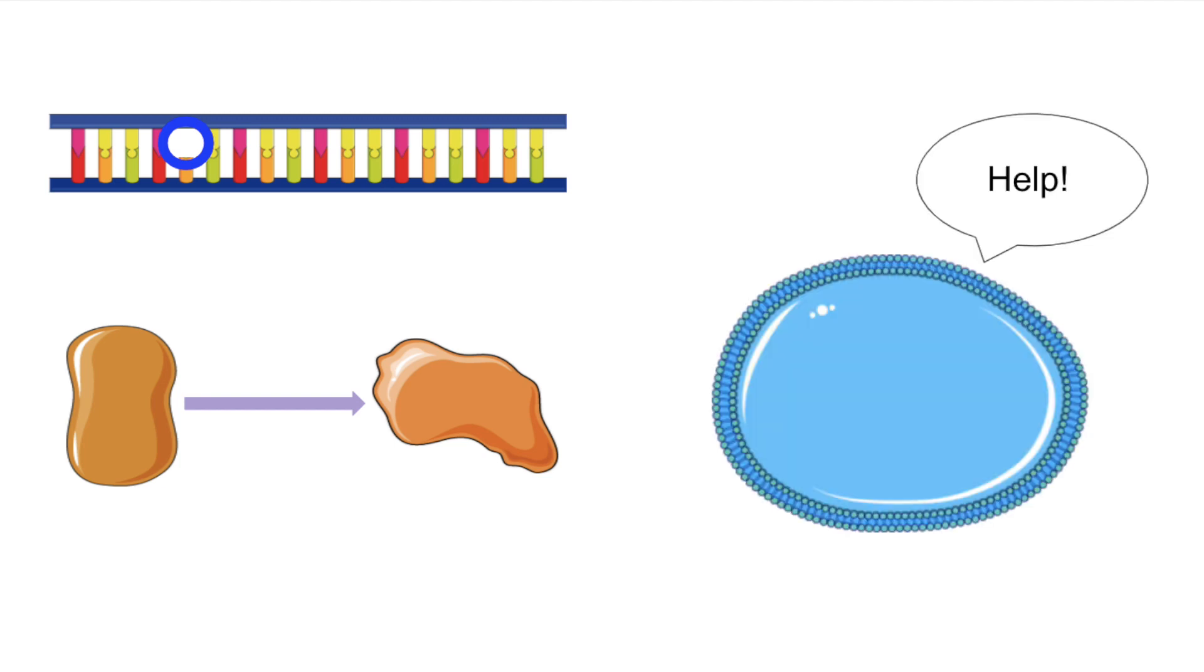When the KIF1A gene becomes mutated, an improper protein product might be produced, meaning the protein is unable to transport materials throughout the cell as well as a healthy protein would have done.